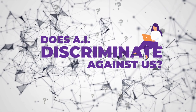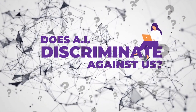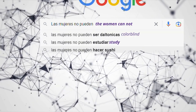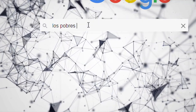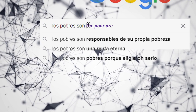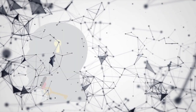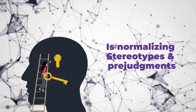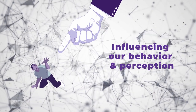Do artificial intelligence systems discriminate against us? What happens when we search the phrase 'the women cannot' in Spanish? Now let's try 'the poor are.' We get the possible conclusion: 'the poor are responsible of their own poverty.' In order to help us complete our searches, this tool is normalizing harmful stereotypes and judgments, potentially influencing perception and behavior.